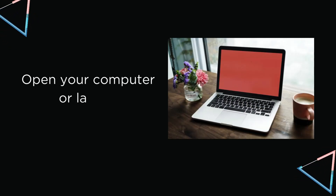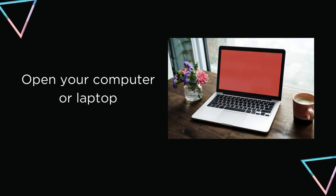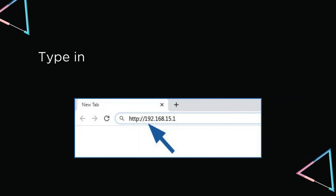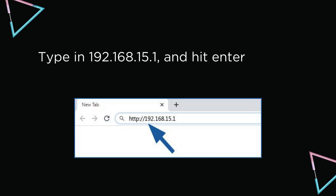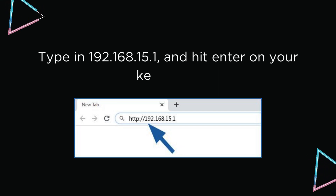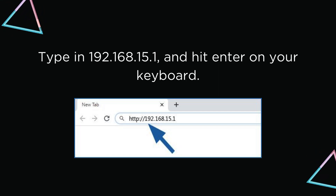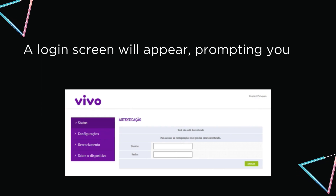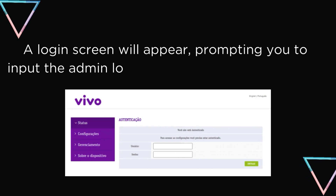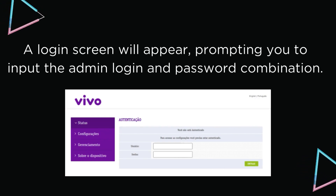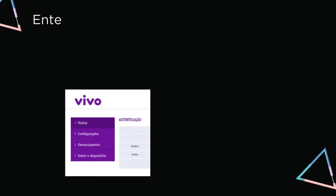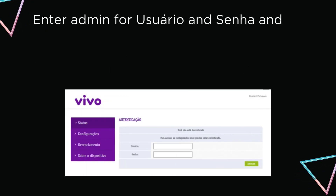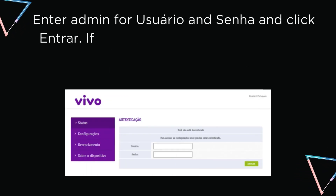Open your computer or laptop. Type in 192.168.15.1 and hit Enter on your keyboard. A login screen will appear, prompting you to input the admin login and password combination. Enter Admin for Usuario and Senha, and click Entrar.